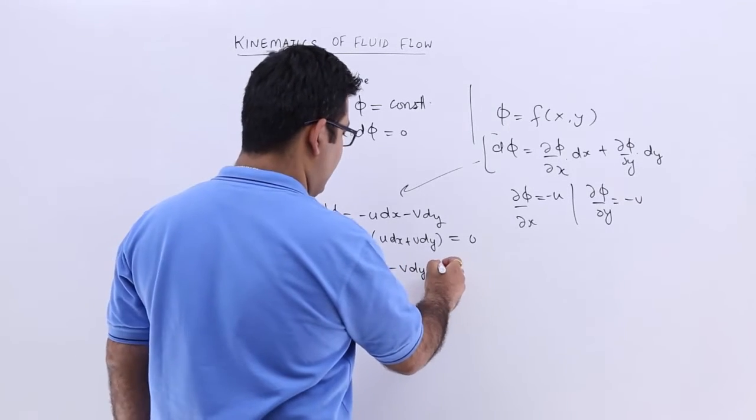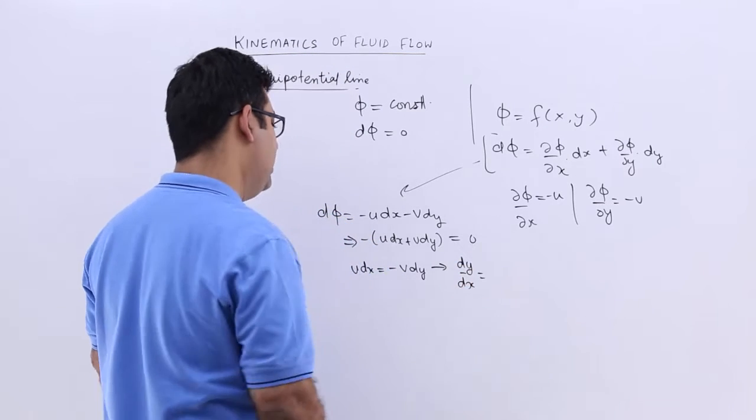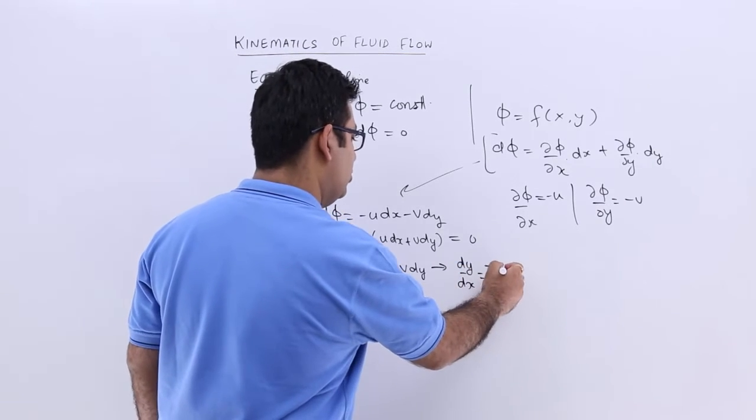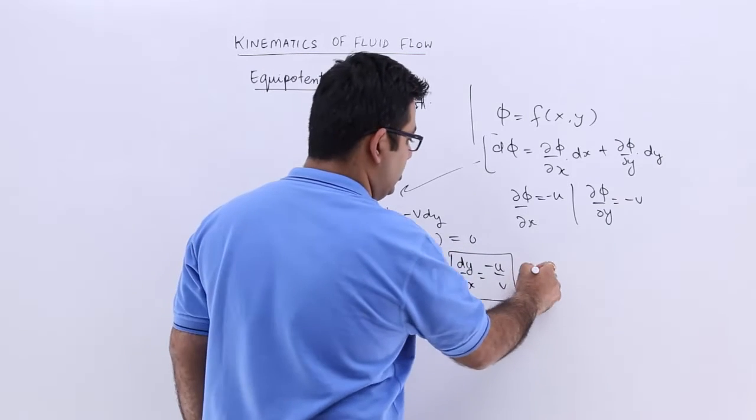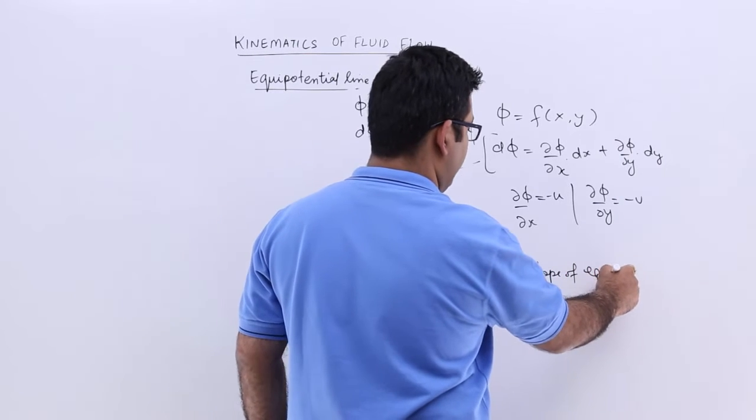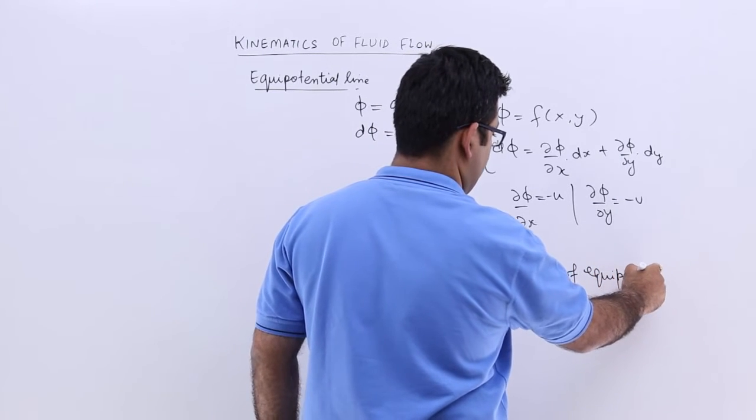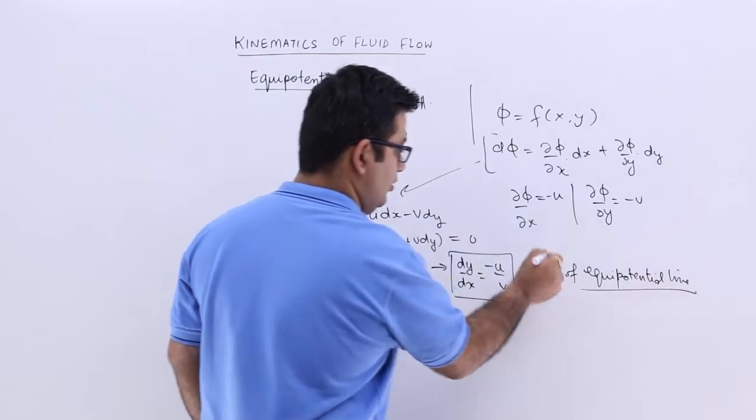And from here, I can get dy upon dx is equal to minus u upon v. So, that is the slope of an equipotential line.